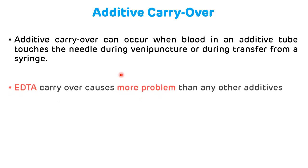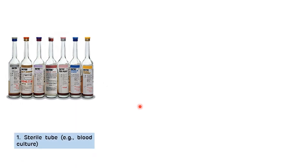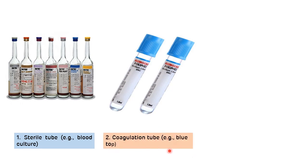Now the order of draw as per the Clinical and Laboratory Standards Institute (CLSI). The first tube in the order is blood culture bottles, also called sterile tubes, because they minimize the risk of microorganism contamination. The first additive tube in the order is the coagulation tube or sodium citrate tube, because additives present in the other tubes affect coagulation tests greatly.